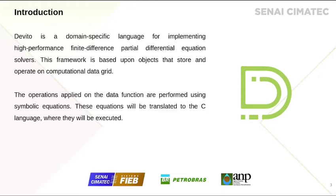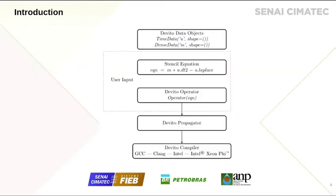DeVito takes this symbolic equation and sends it to the operator. This is a structure inside DeVito, and this operator will generate optimized C code that executes that symbolic equation that the user wants to solve. If we take a look at the basic workflow of DeVito, we need to define the data we want to manipulate. Then we need to define the symbolic equation — the equation that we want to solve. We can see here the second derivative on time and the Laplacian of the function U. These equations are sent to the operator, and then the operator will generate the optimized C code. This optimized C code is going to be compiled, executed, and the result will be returned to the user, who then has the solution for the equation they wanted to solve.